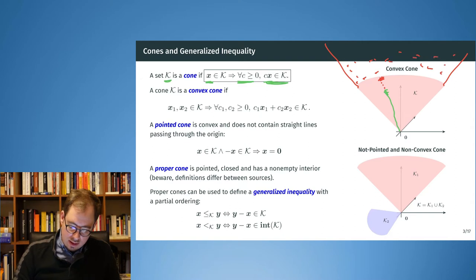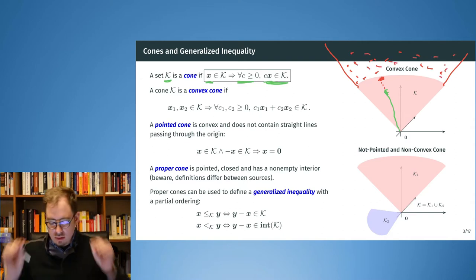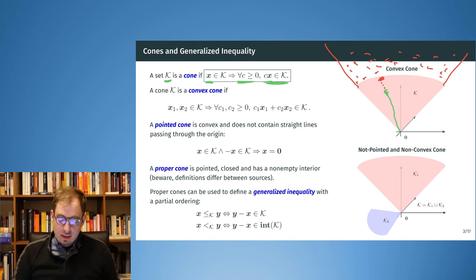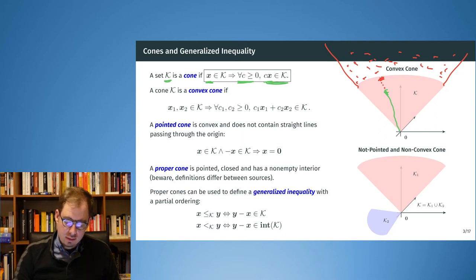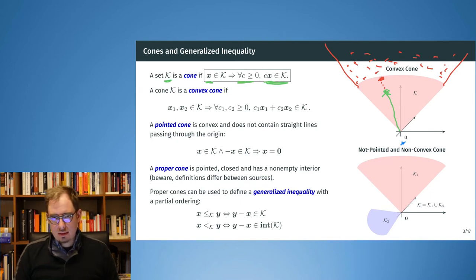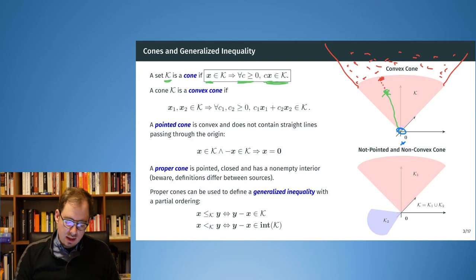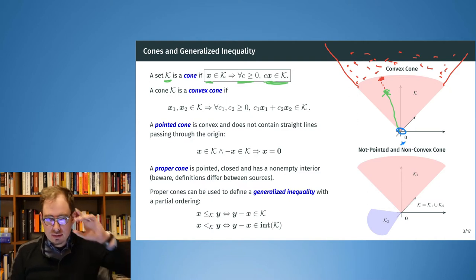We must not multiply with a negative constant, because if we multiplied x by a negative constant we could end up on the other side, which is not allowed. However, we can always multiply our vectors with zero, because zero is always contained in the cone.